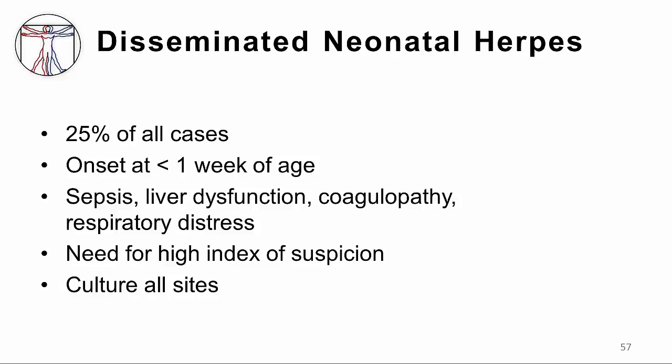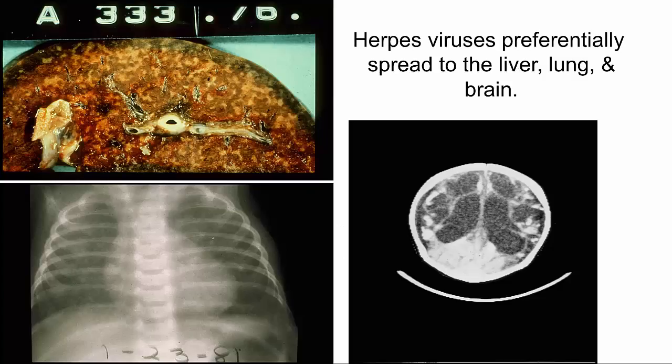To diagnose disseminated infection, you try to culture the baby from as many sites as you can access, such as the nose, mouth, vagina, rectum, skin, and so forth. This picture shows the three most common places that disseminated herpes affects in a newborn or other compromised hosts: the liver, showing acute yellow atrophy; the lung, which shows pneumonia; and the brain, which in a newborn can be severely destroyed from this virus with a bad encephalitis.